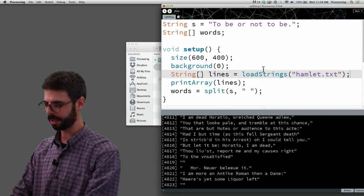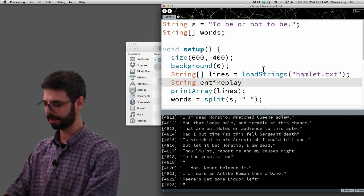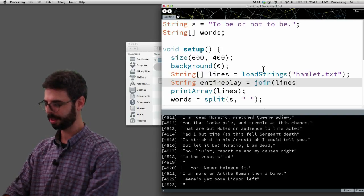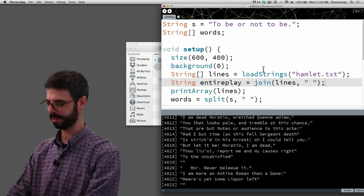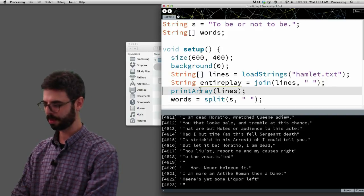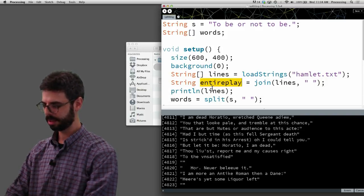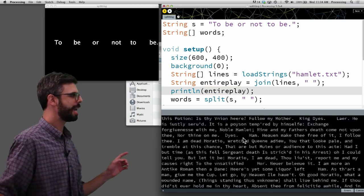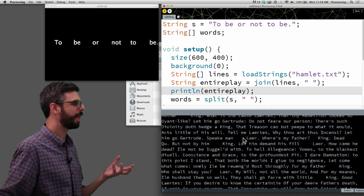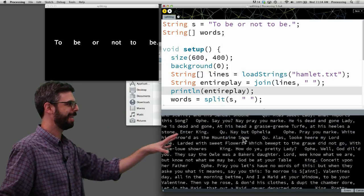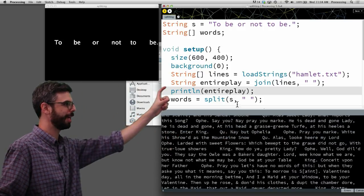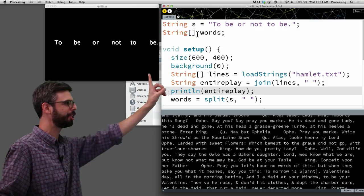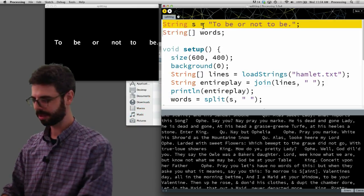So what I first want to do is I want to join that whole thing together. So now I'm going to say entire play equals join lines and put a space in between each line. Now let's print the entire play. Now we can see here, now all the text from the entire play is here down in the console. It's all in this single string. So this single string entire play is just like my string s up here.